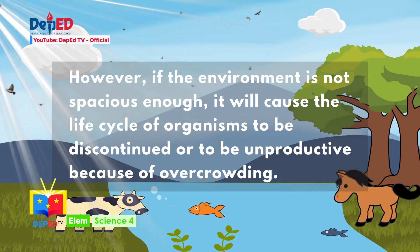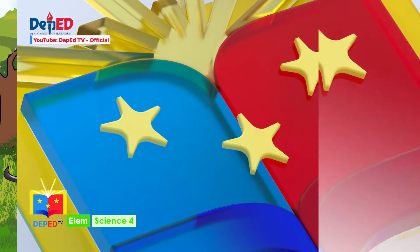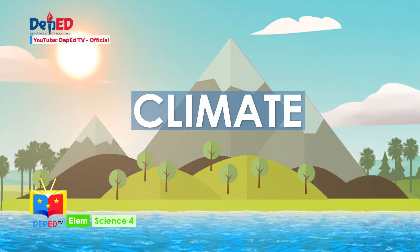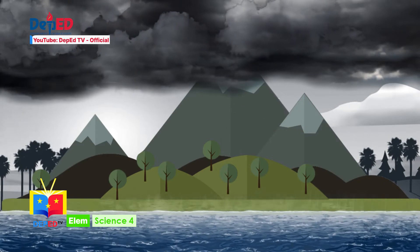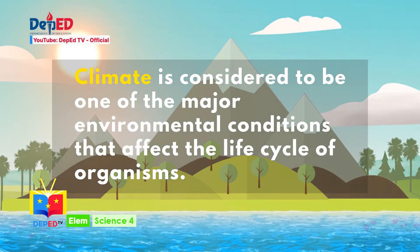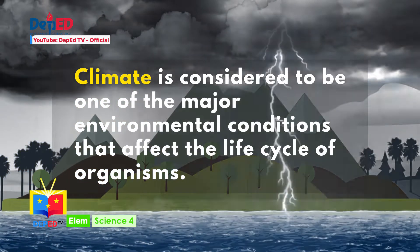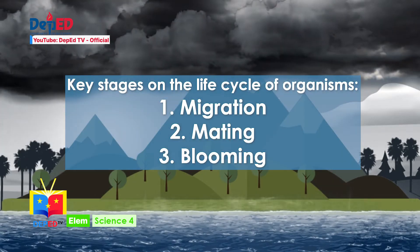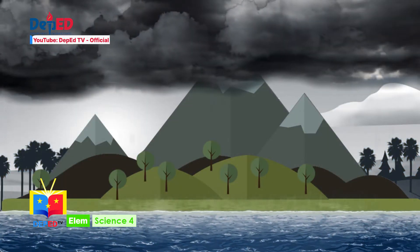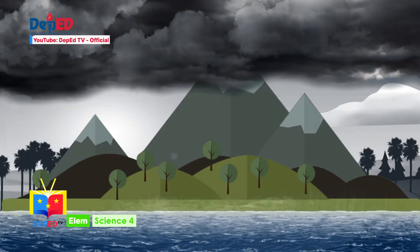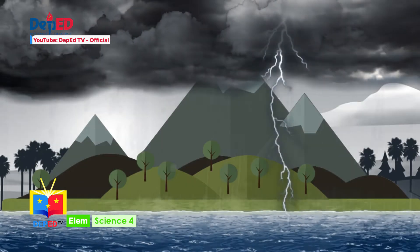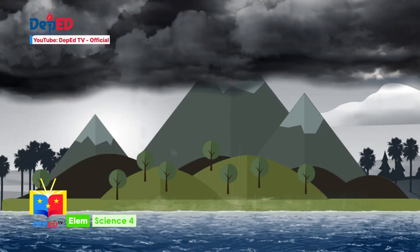Space refers to the land occupied by plants and animals. If the environment is not spacious enough, it will cause the life cycle of organisms to be discontinued or unproductive because of overcrowding, and organisms will compete for resources. Climate is considered one of the major environmental conditions that affect the life cycle of organisms. Changes in climate affect key stages such as migration, mating, and blooming — especially for birds and butterflies. When seasonal and migratory animals come to a particular environment, growth and survival are reduced.